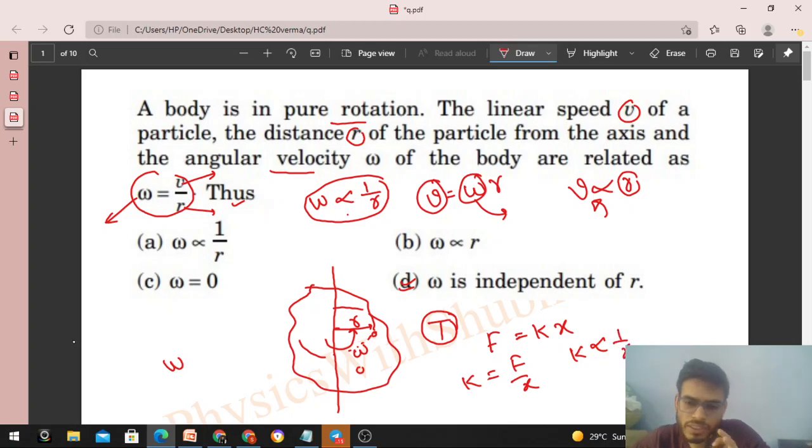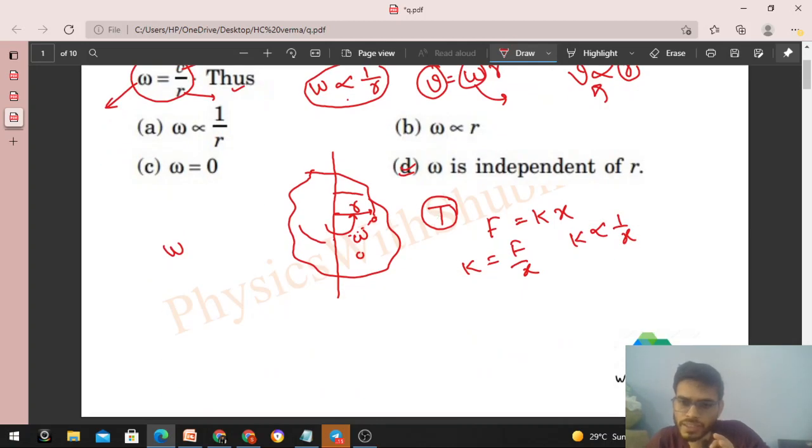K is constant, right? You cannot say k is inversely proportional to one by x or k is directly proportional to F. No, you should know what the constant is. F is directly proportional to x.